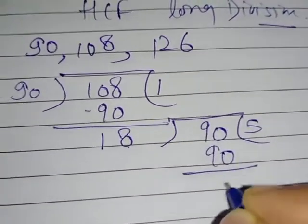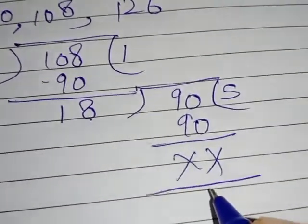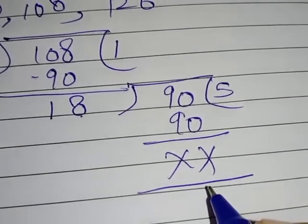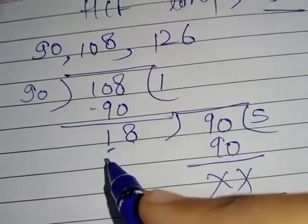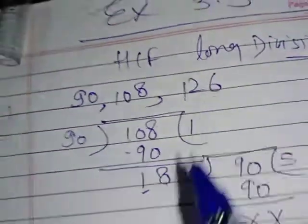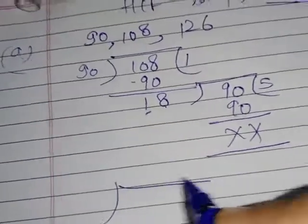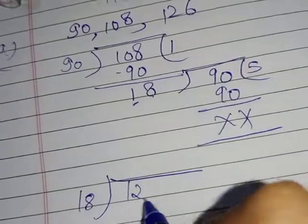We know 18, 5's are 90. Now, you know, here nothing is left in the remainder. So, this divisor, with this last divisor, we will solve 126. We will write 18 here and 126 here.